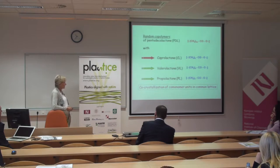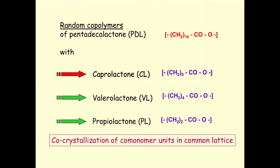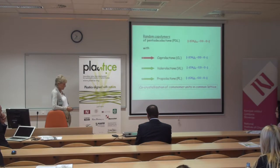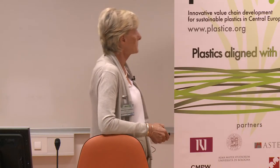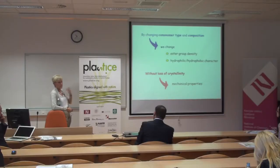What I showed for the caprolactone copolymers also happens when the second monomer is valerolactone or propiolactone — we obtain co-crystallization in all those systems. This is a very specific characteristic of pentadecalactone: helping other monomers to enter its own crystal lattice. In these co-polymerizations we can change the ester-group density, and therefore the hydrophilic-to-hydrophobic character, without losing crystallinity — thus preserving good mechanical properties.